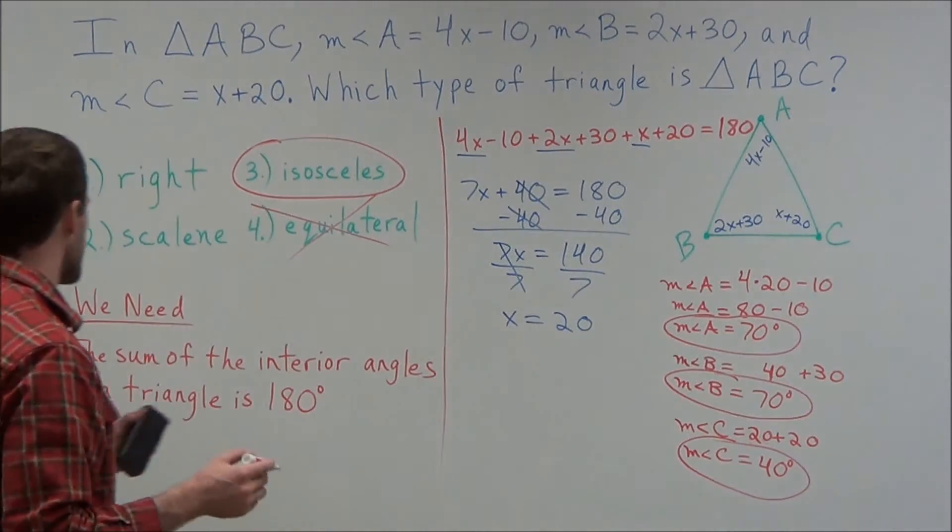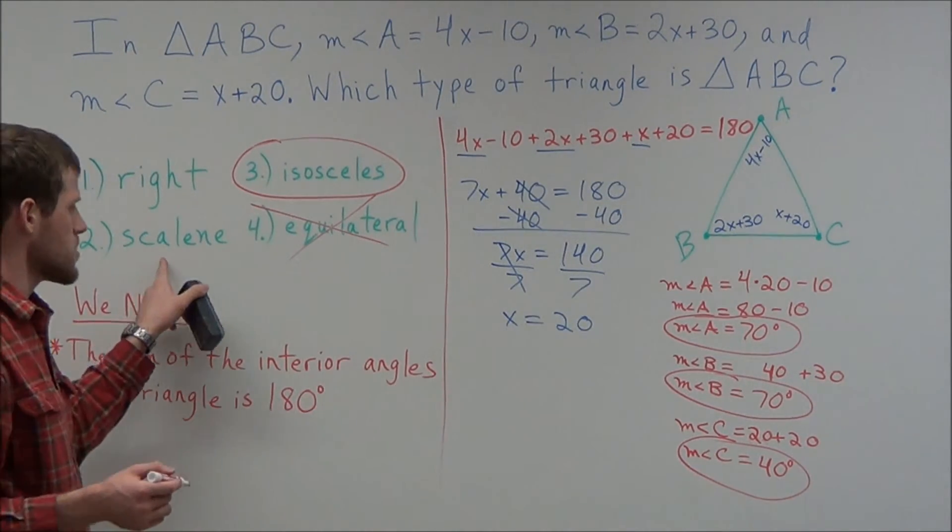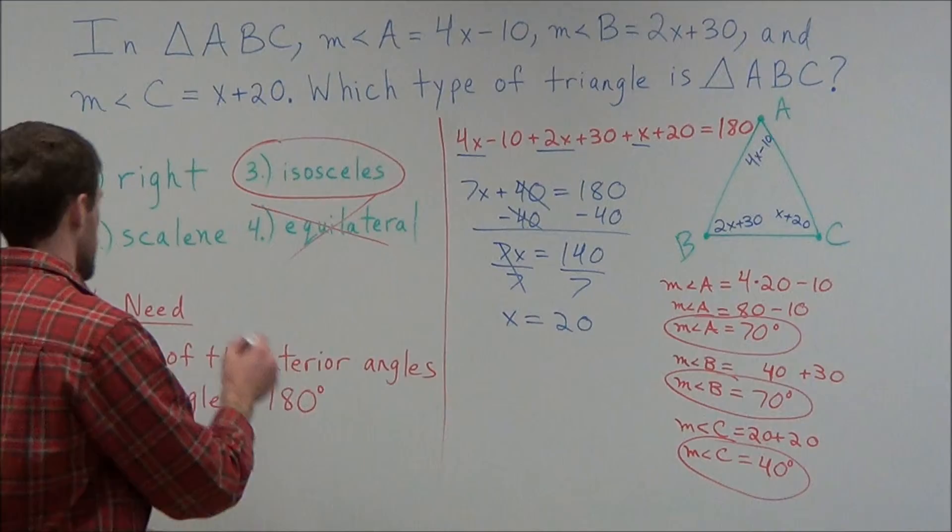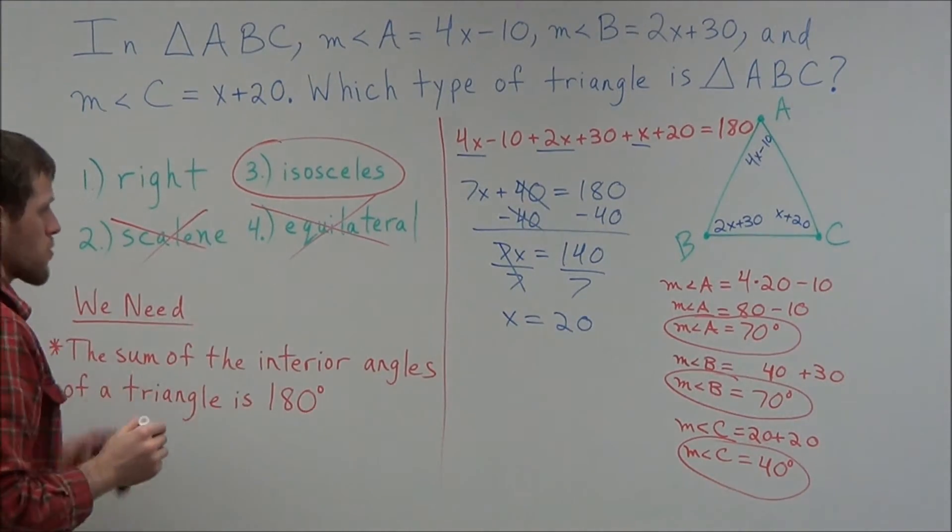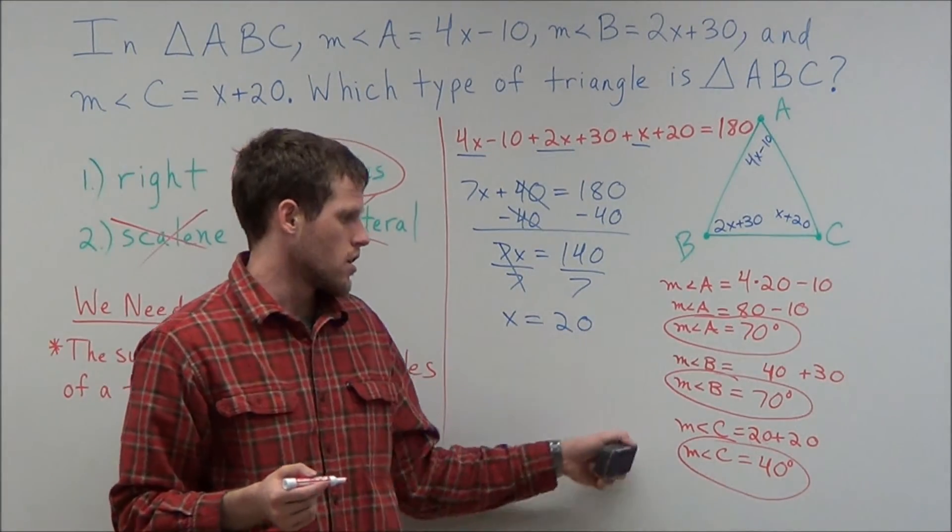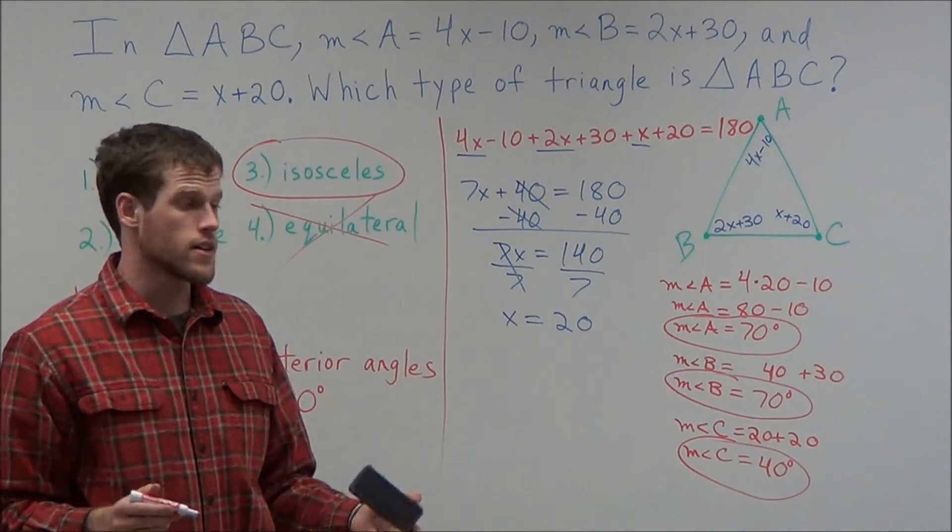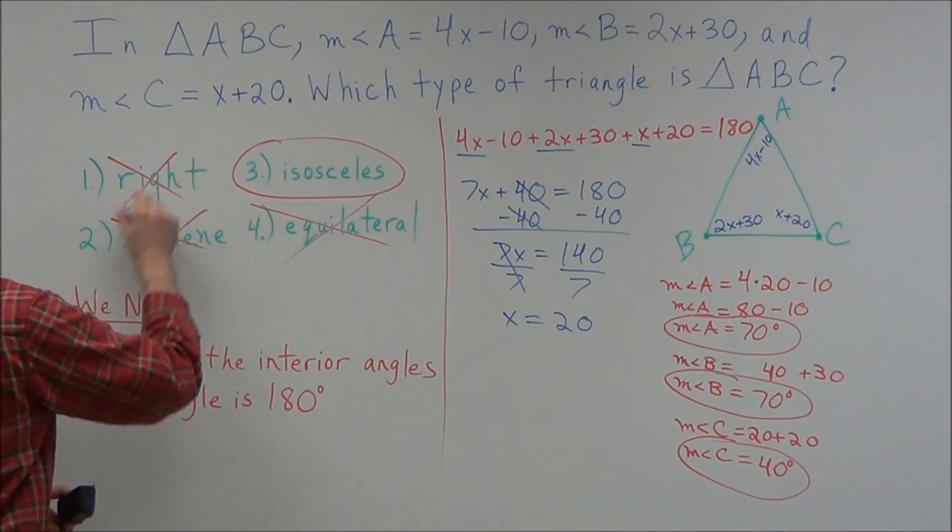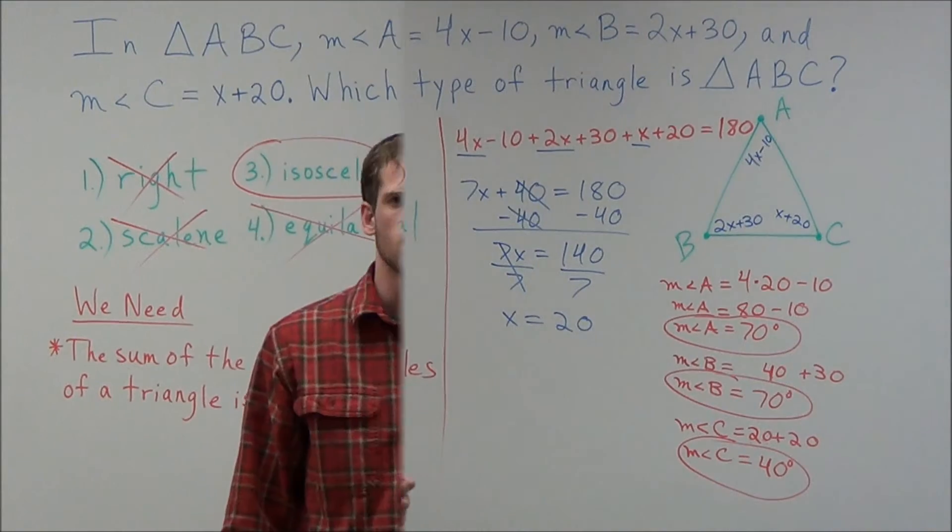So looking at this piece of information, we know that we don't have a scalene triangle because all 3 angles would have to be different. And we know that we don't have a right triangle because none of our angles here are 90 degrees. So once again, our answer to this problem, we have an isosceles triangle.